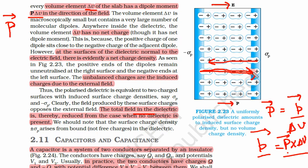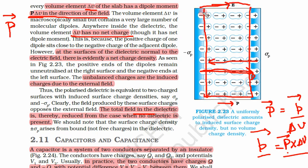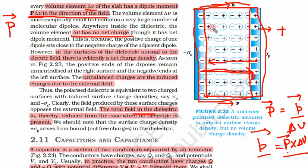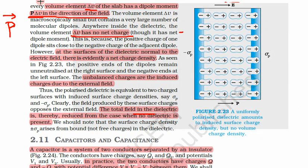Because dipole moment is always from negative to positive, there is a net dipole moment in the direction of the external field. This volume element ΔV has no charge — if we consider this volume element as a whole, there is no net charge, because the total number of positive charges and the total number of negative charges are exactly equal and cancel each other. But at the boundaries, at one side positive charges are accumulated and at the other side negative charges are accumulated. Overall, however, there is no net charge.